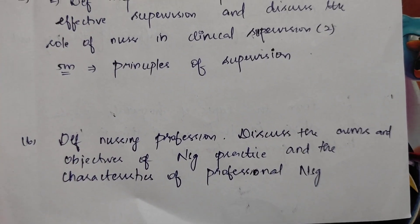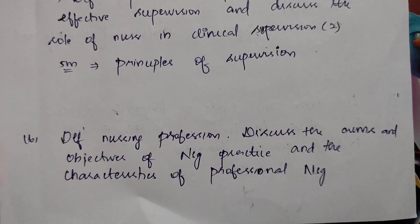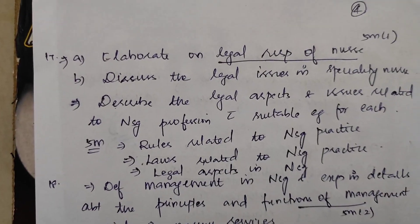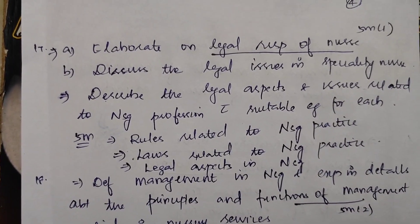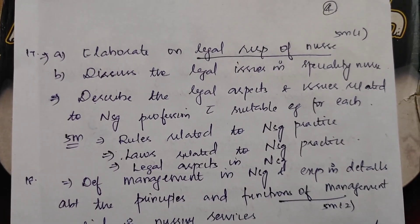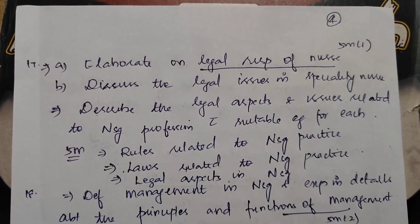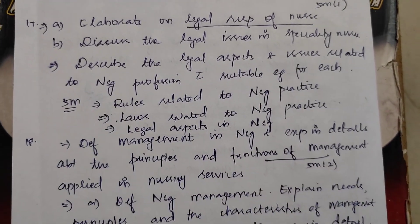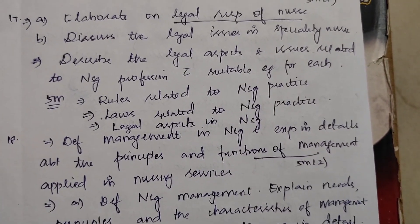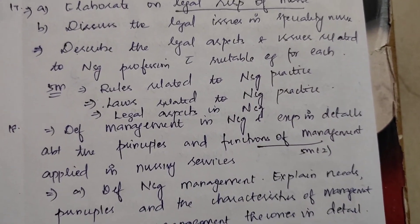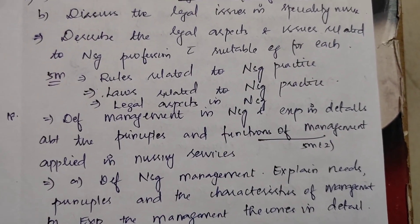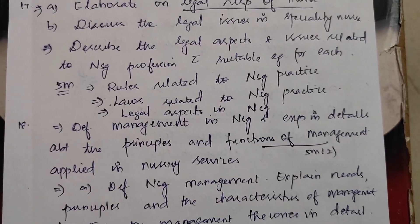Next, define nursing profession and explain the aims and objectives of nursing practice and the characteristics of professional nursing. Next, on legal responsibilities of a nurse, discuss the legal issues in specialty nursing — 15 marks. Legal responsibilities of a nurse appears in 5 marks. Describe the legal aspects and issues related to nursing profession with suitable examples. In 5 marks: rules related to nursing practice, laws related to nursing practice, and legal aspects in nursing.